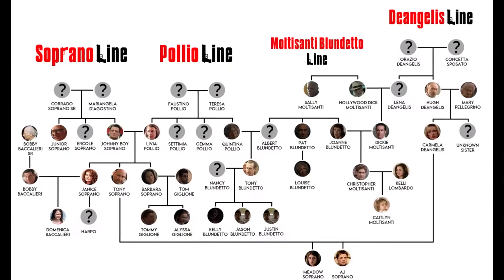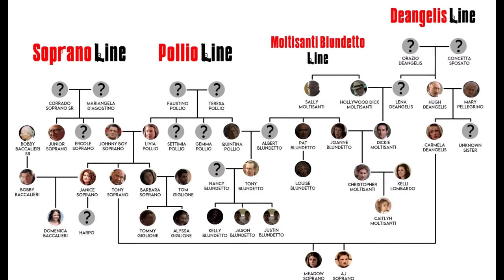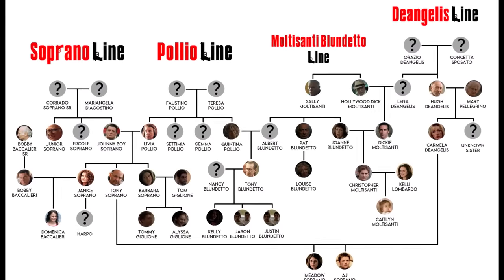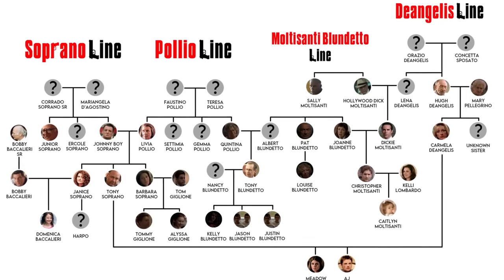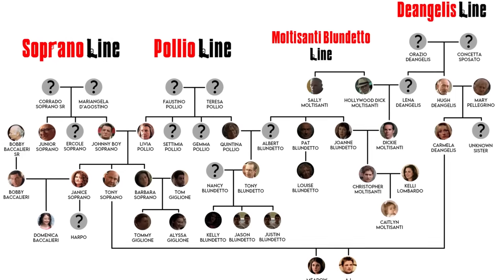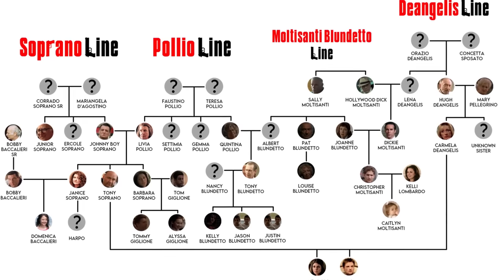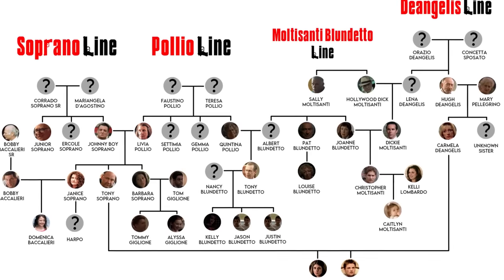Phil Leotardo is actually a second cousin to Marie, meaning he and his family are connected to this line as well. Anyway, that's the Sopranos family tree. I hope this video helped you understand the relationship between all the characters, and let me know if I forgot anyone or left them off the list. And as always, stay tuned for more Sopranos content, coming soon.